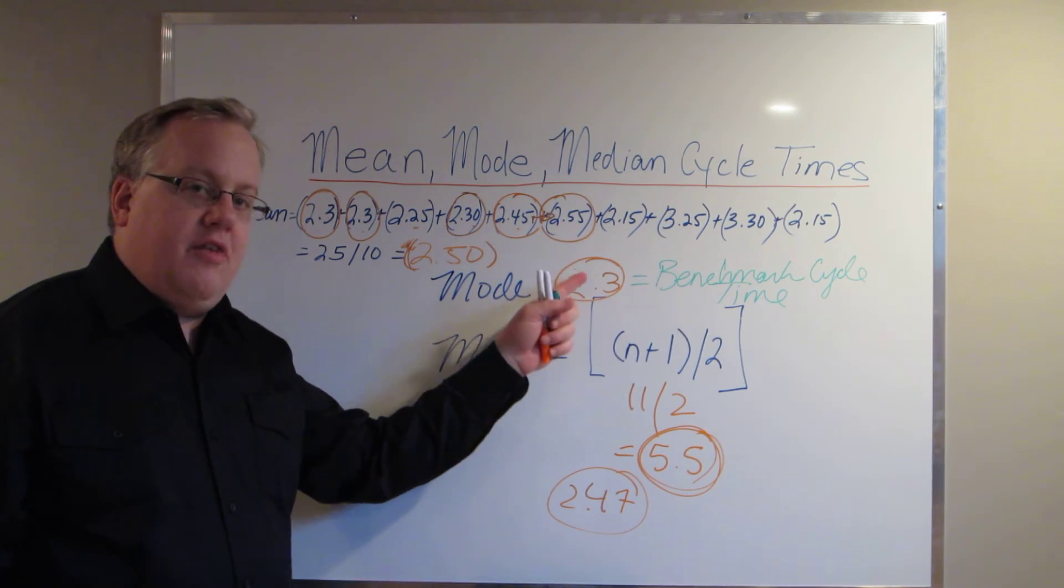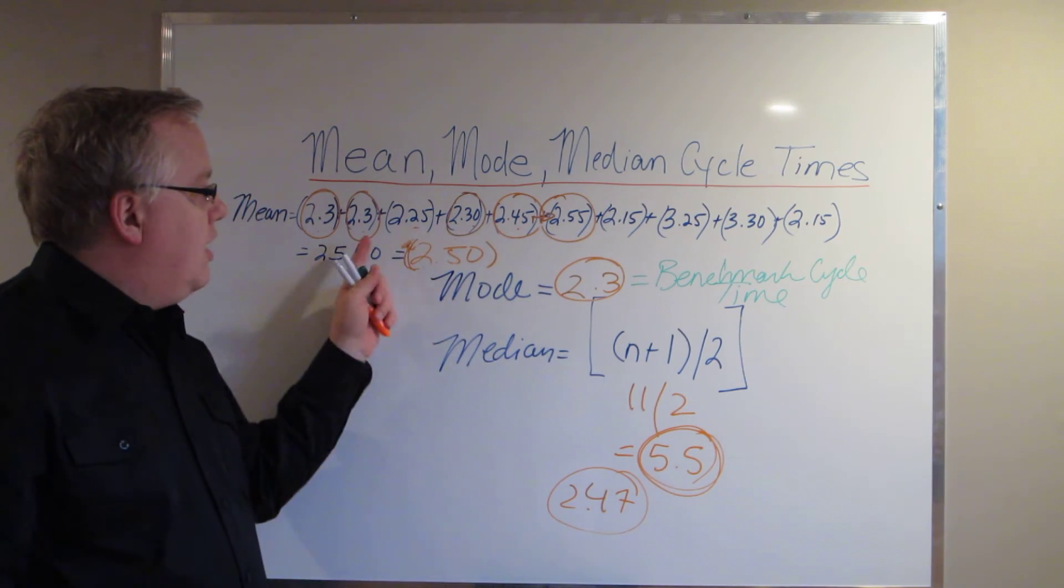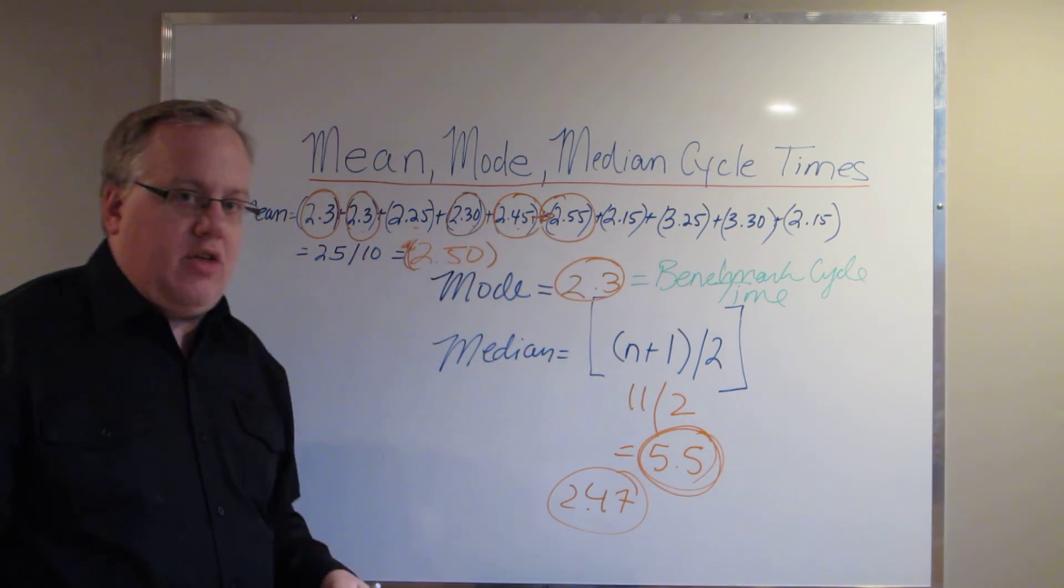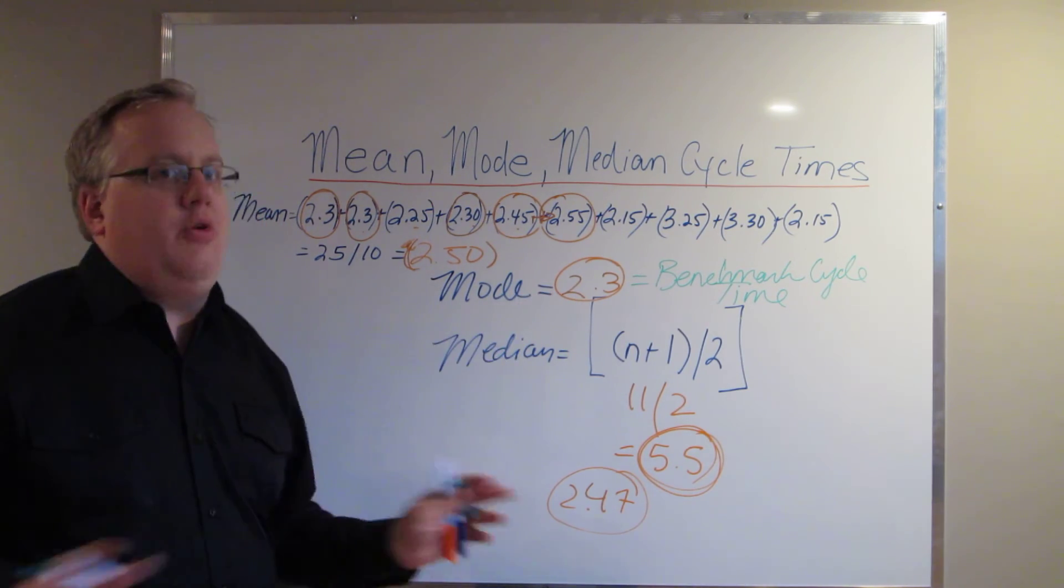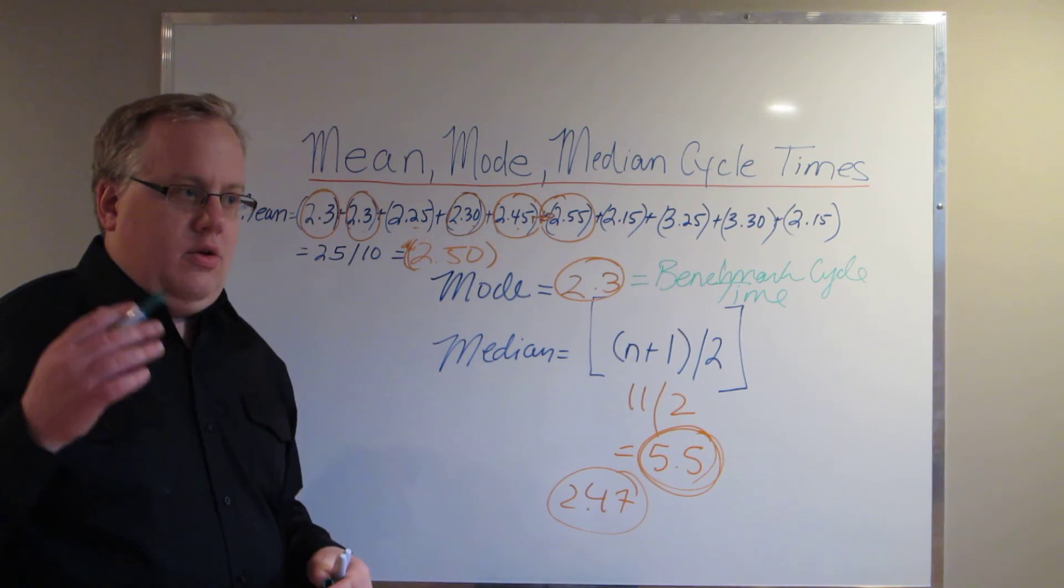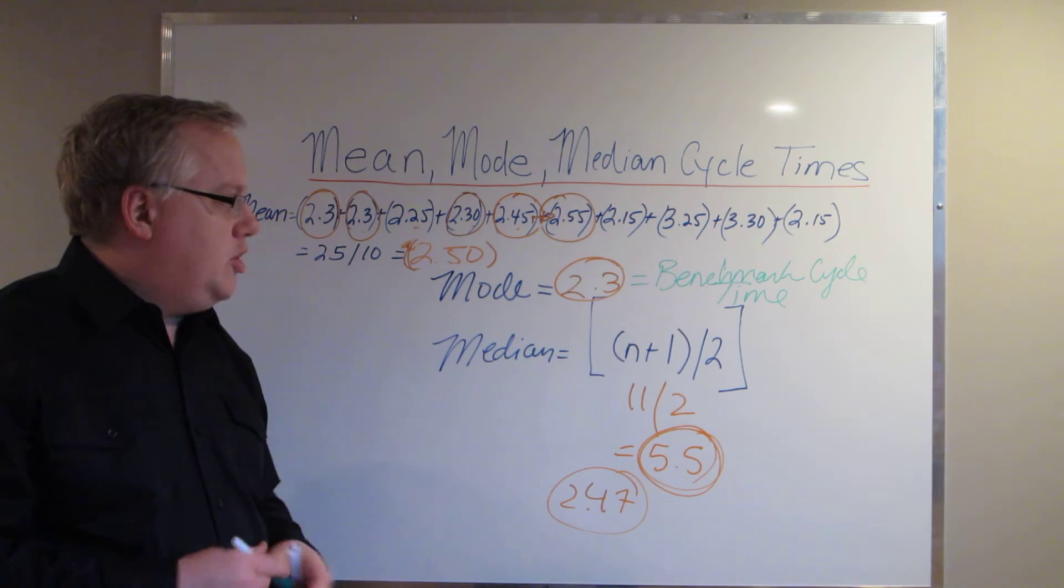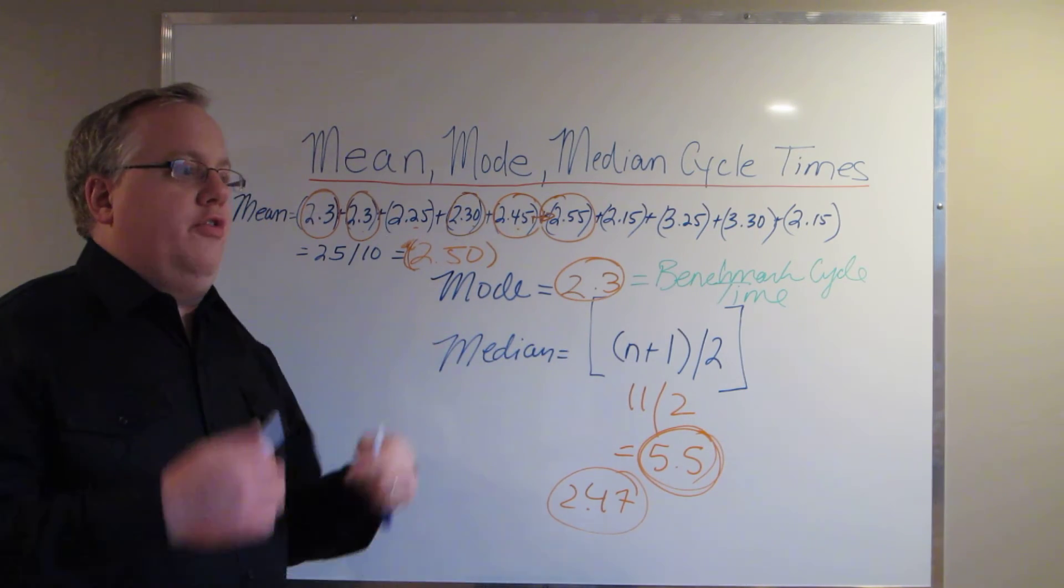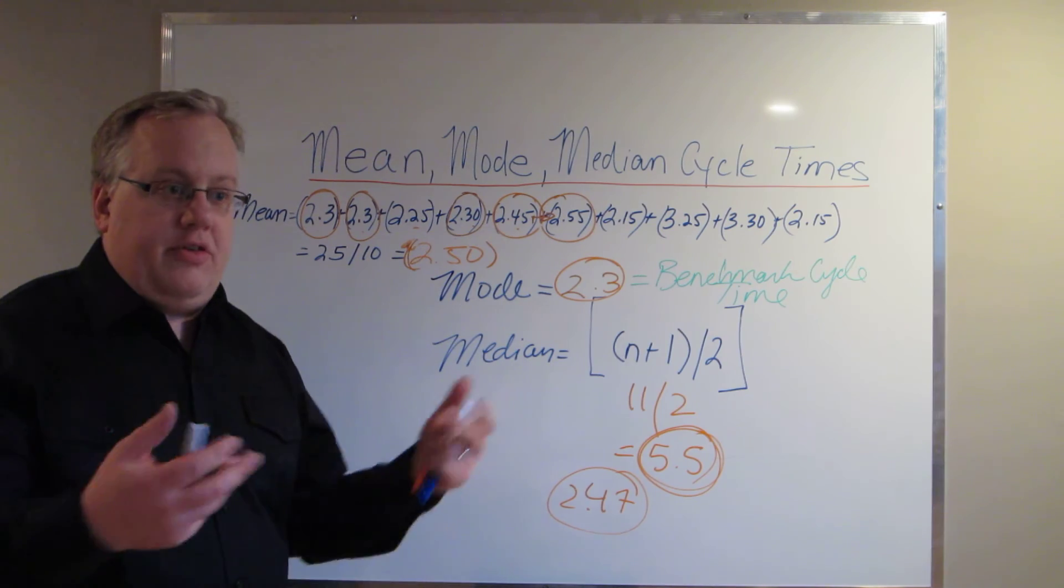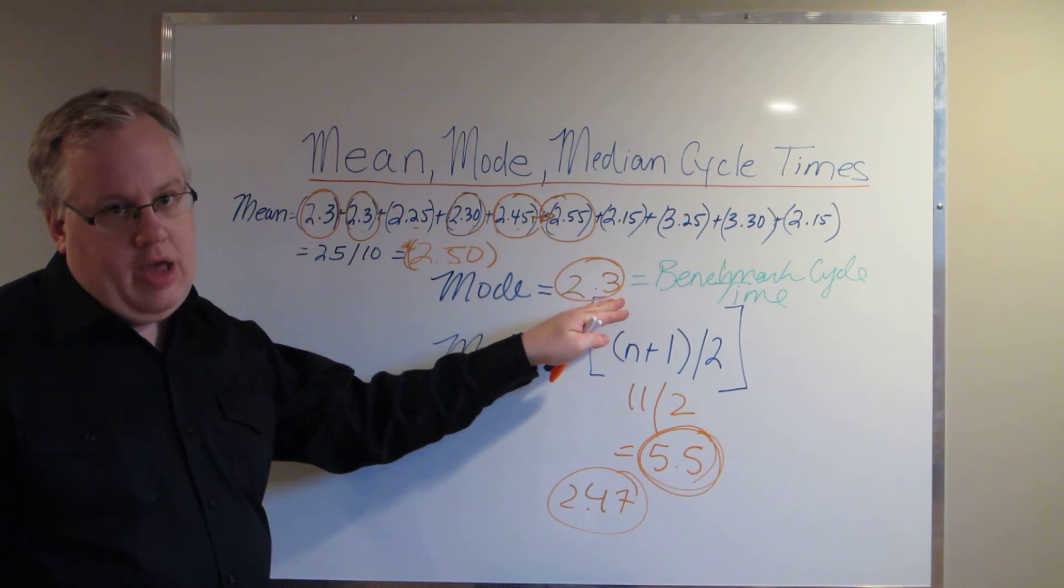We based everything off of that 2.3, and we backtracked our analysis in order to find out why certain cycle times were higher than this 2.3. Now again, the purpose here is not to get 2.3 every single time, because work stoppages are common in manufacturing. They're going to occur. But what you want to do is you want to find out what your mode cycle time is over several sample portions that you're doing. And you want to get as close to that mode cycle time as you can.